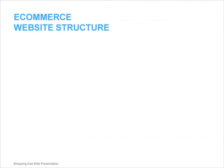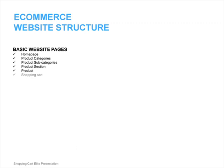The first part of a shopping cart is the website. A basic website usually consists of a few web pages such as homepage, category, subcategory, product section, product page, shopping cart, checkout, and information web pages such as contact us.